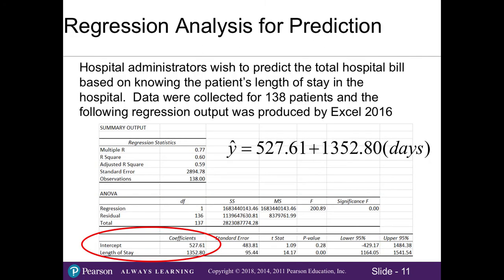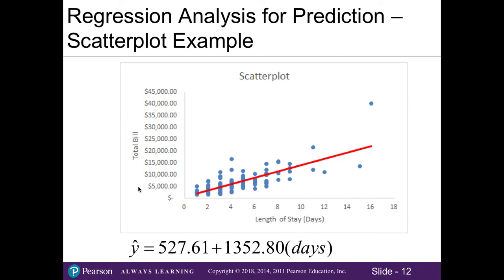So in the textbook, it gives an example of hospital administrators wanting to predict the total hospital bill based on knowing the patient's length of stay in the hospital. Data were collected for 138 patients and the following regression output was produced by Excel. So here, using our coefficients, we can create a regression equation right here in that our intercept is 527.61 and our slope related to the length of stay is 1,352.80. And we'll multiply that by our x, which in this case is the number of days people stay. So our independent variable is the days that a patient stays in the hospital. And our y variable, our dependent variable that we wish to understand is the total hospital bill. If we were to plot this particular scenario, we can see that by looking at the length of stay or the number of days a patient is in the hospital, we can see that our total bill increases. Our data here is plotted and we can identify the regression equation that best fits the data.